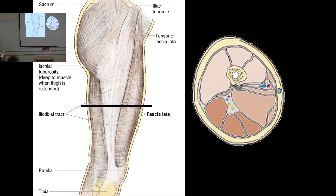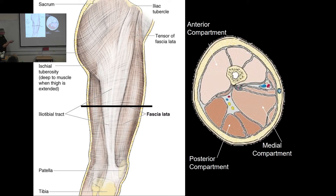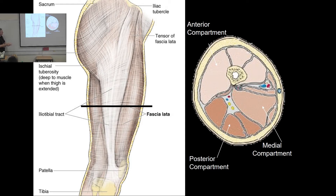Cross-sectioning the thigh, we can see compartments. Within the single stocking of fascia, there are sub-fascial compartments — like the thin films you see over muscle at the butcher's. These separate the anterior, posterior, and medial compartments of the thigh, and they are important in something called compartment syndrome, which we'll discuss at the end.